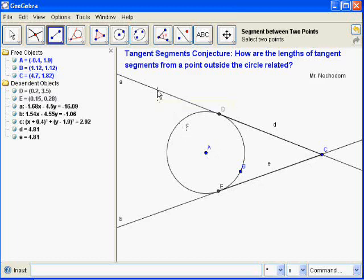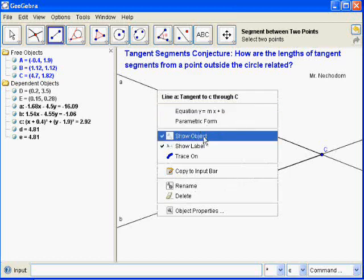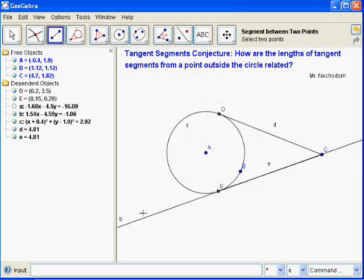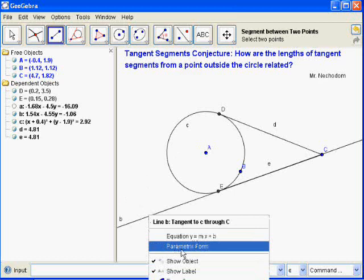And I can go to these lines now. If I right click and click show item, I don't want to delete them. I simply want to hide them. Right click and show object. Now they're hidden.